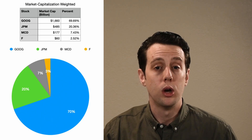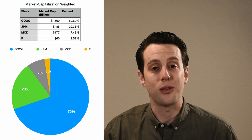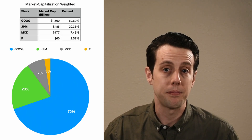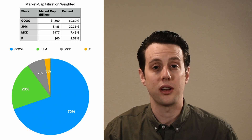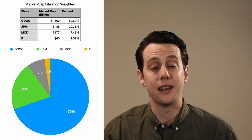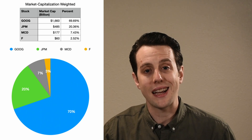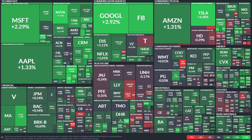Using the market cap would result in 69.69% to Google, 20.36% to JP Morgan, 7.43% to McDonald's, and 2.52% to Ford. This is how the S&P 500 weighs companies in the index — it is a market capitalization weighted index. Here is a visualization of the S&P 500 index with the size of each box corresponding to the market cap or weight of that company in the index.